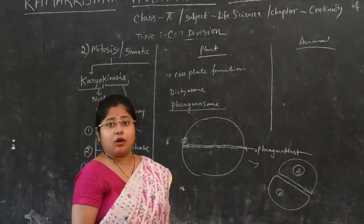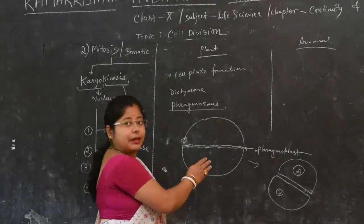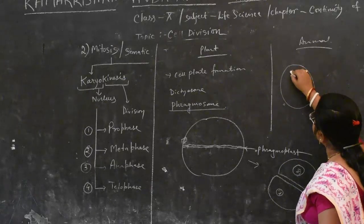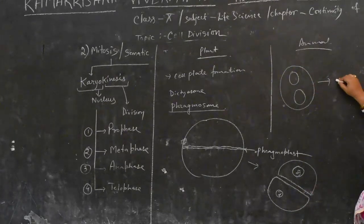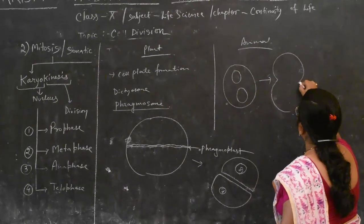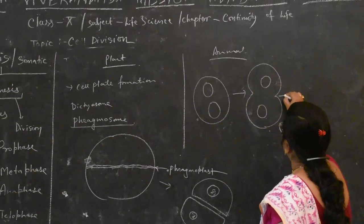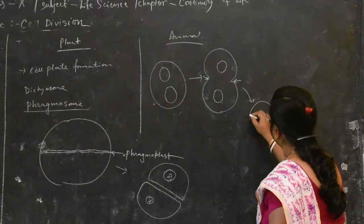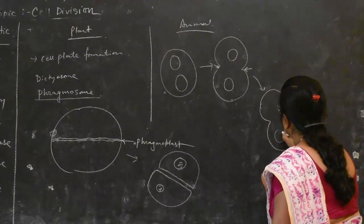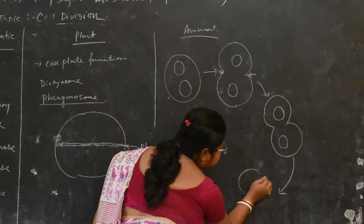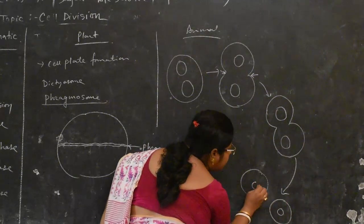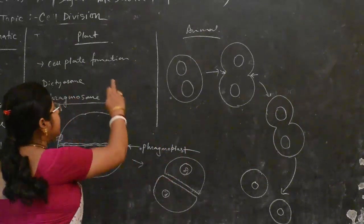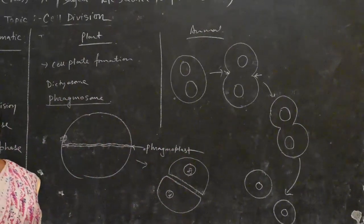In animal cells, Cytokinesis takes place by furrowing, not by cell plate formation. To summarize, in plant cells Cytokinesis occurs by cell plate formation via dictyosomes, while in animal cells it occurs by cleavage furrow.